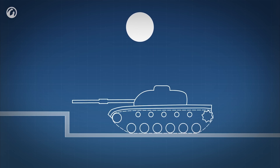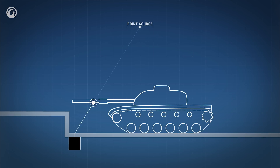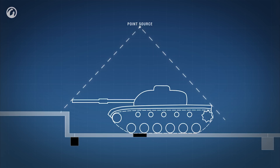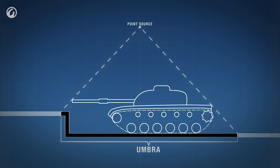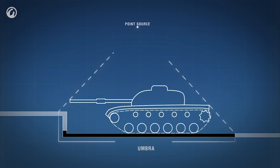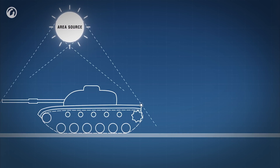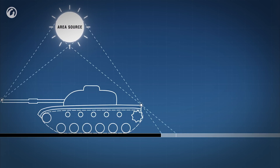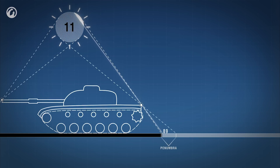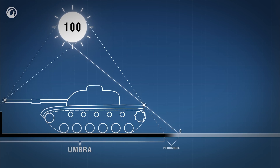The next problem to be solved was creating soft shadows. In video games, a light source such as the sun is often represented by a single point to optimize the load on the graphics card. As a result, only two scenarios are possible: the point on the ground is either covered by an obstacle and can't see the light source — in which case there's a shadow — or vice versa. In reality, the sun emits light from many points on its surface. For a point on the ground, the sun can be partially covered by an obstacle, meaning it illuminates that point with only part of its surface. That's how penumbra appears — a half-shade, or soft shadow.